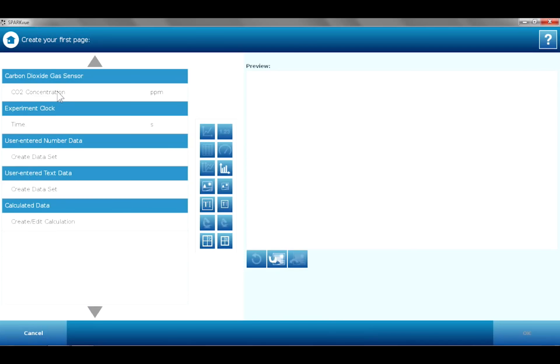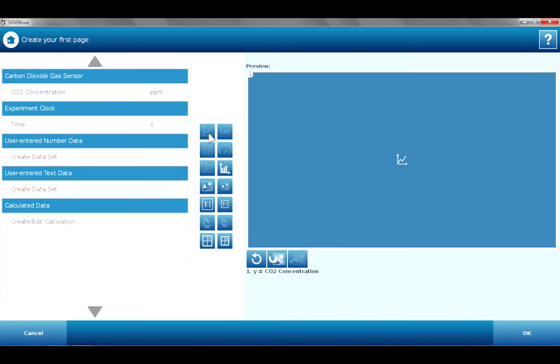Before I begin data collection, I'm going to need to open up a page or build a page in the SparkView program. I'm going to choose Build. My carbon dioxide gas sensor is listed. I'm going to click on CO2 concentration, and I want to create a graph display of that. So I'm going to click on the graph.